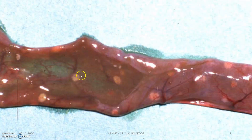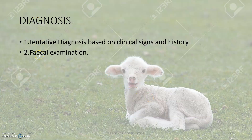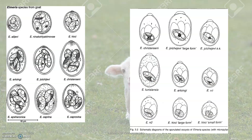Diagnosis is based on clinical signs and history for a tentative diagnosis. You can also visibly examine post-mortem lesions or perform fecal examination to identify oocysts.